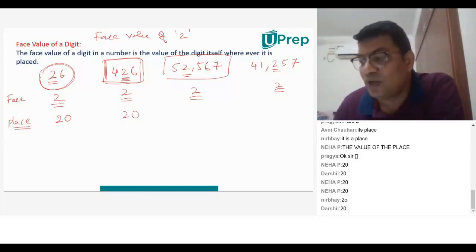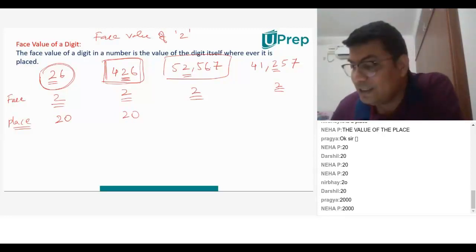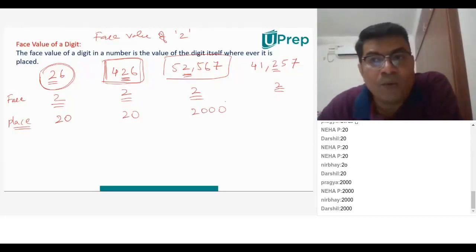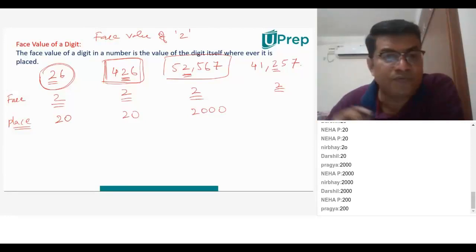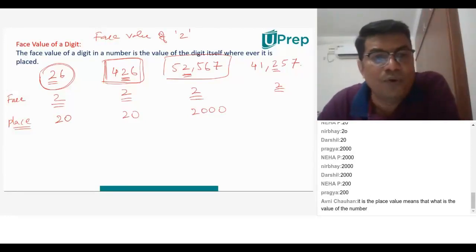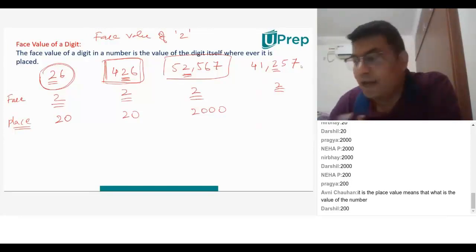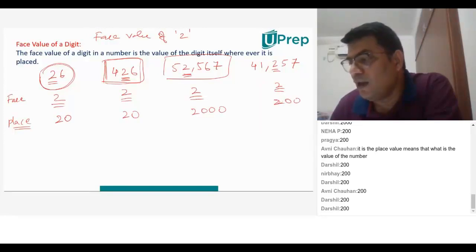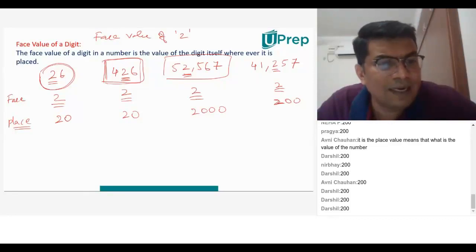In fifty-two thousand five hundred and sixty-seven, what is the place value of 2? It's in the thousands position, therefore its place value is two thousand. And in the last example, forty-one thousand two hundred and fifty-seven, what's the place value of 2? That will be two hundred.